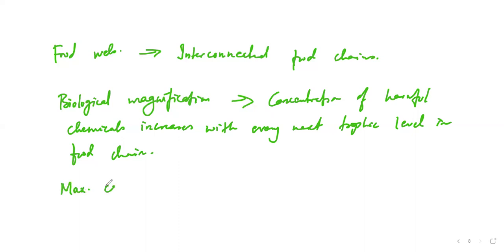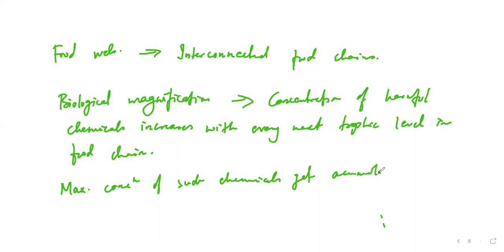Whatever maximum concentration is there of such chemicals, they get accumulated because the ultimate consumer is human beings. So chemicals get accumulated in the humans. Hence they are considered the top level in a food chain.